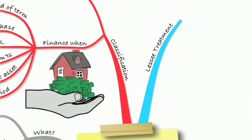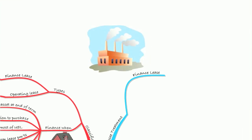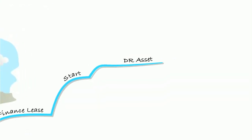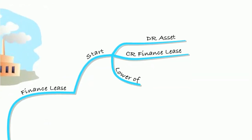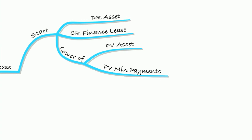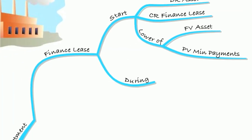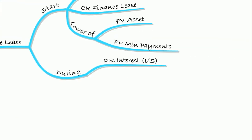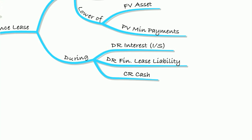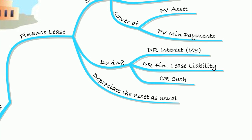For the lessee treatment of a finance lease: at the start, we need to create an asset because the risk and rewards of ownership have transferred to the lessee. We capitalise both an asset and a liability — debit an asset and credit a finance lease liability — at the lower of the fair value of the asset and the present value of the minimum lease payments. During the year, we have a charge to the income statement for lease interest, and we reduce the finance lease liability with the cash paid.